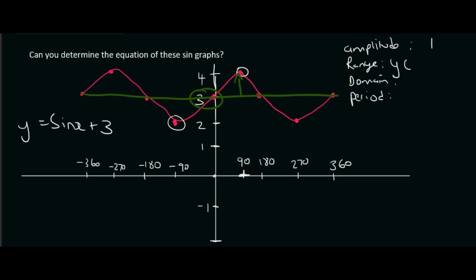The range is the y values. And we can see that the lowest y value is 2, and the highest y value is 4. The domain, that's the x value. So we can see that the most left x value is minus 360, and the most right one is positive 360. So we say from minus 360 up to 360 like that. And then the period for a sin graph is always 360 degrees.